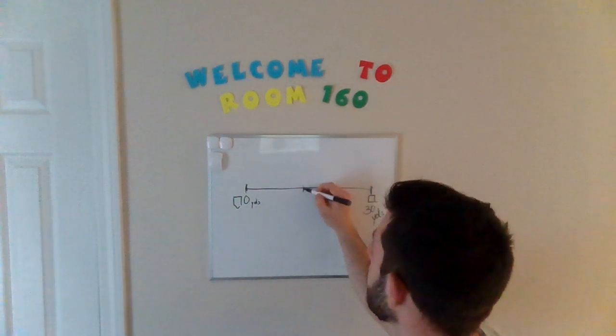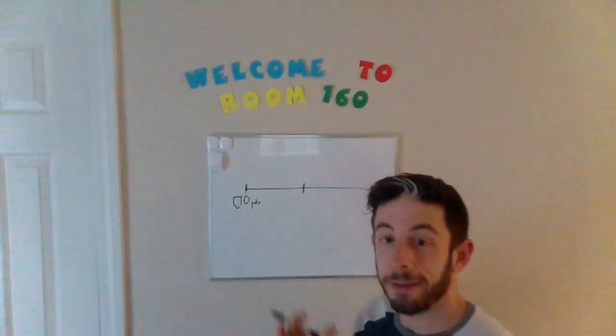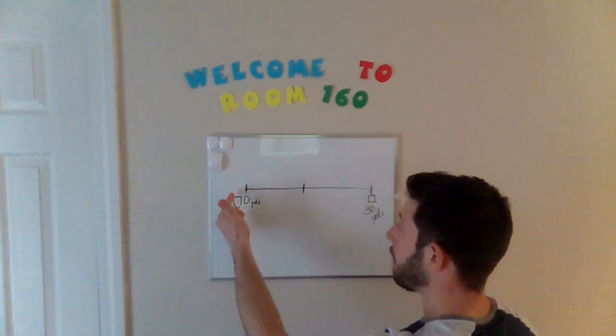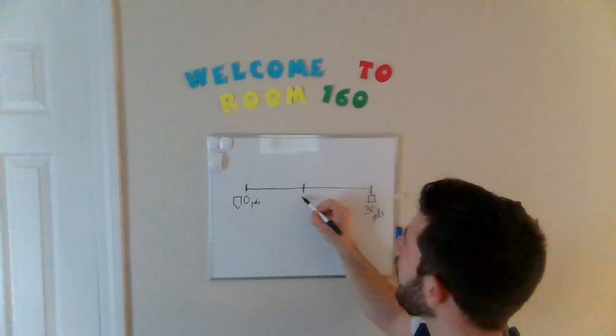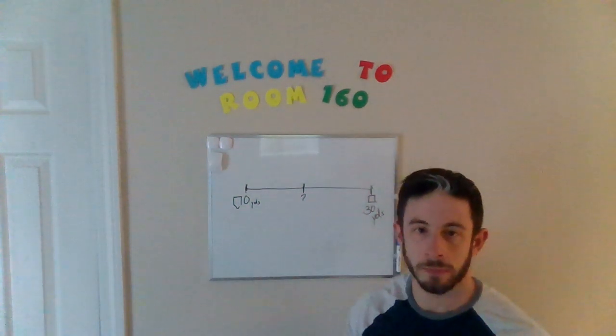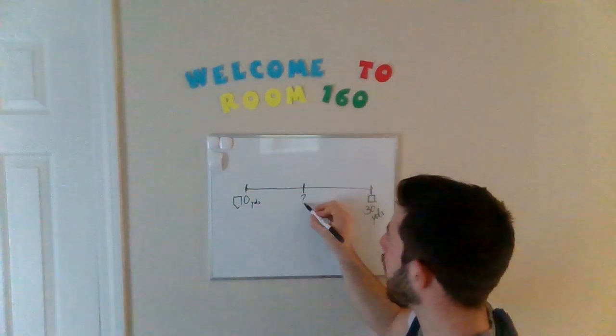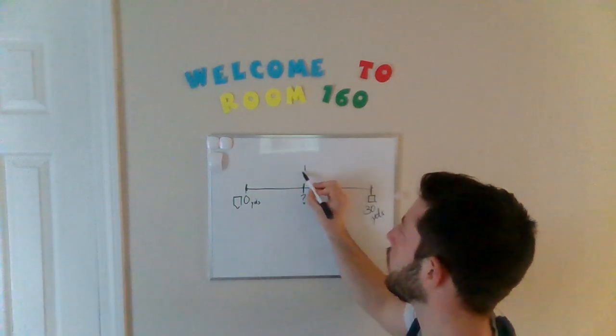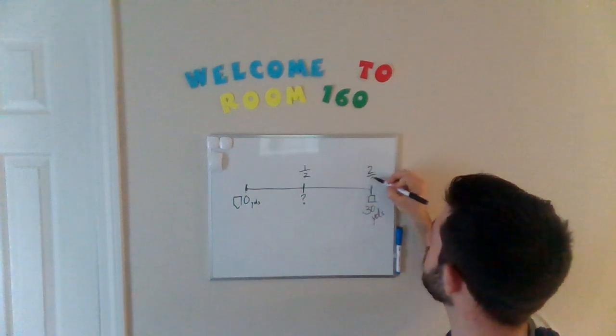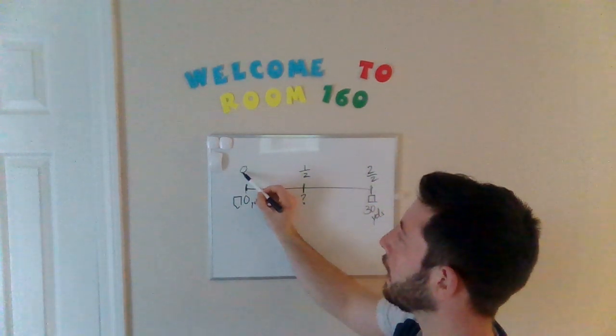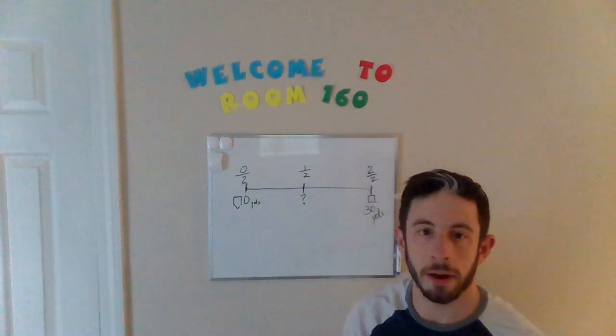Well, it would be right here, right? It's halfway between home plate and first base, but we don't know how far that is. We do know the fraction, however. This is one half. A whole would be two halves. And if he hasn't moved at all, he has moved zero halves of the way there.